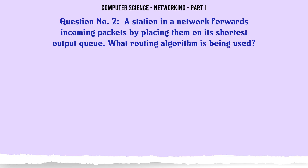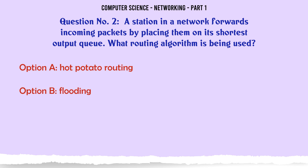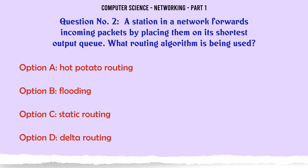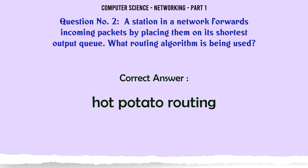A station in a network forwards incoming packets by placing them on its shortest output queue. What routing algorithm is being used? A. Hot potato routing. B. Flooding. C. Static routing. D. Delta routing. The correct answer is: Hot potato routing.